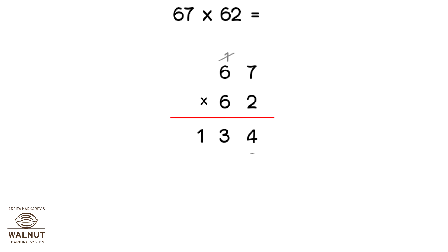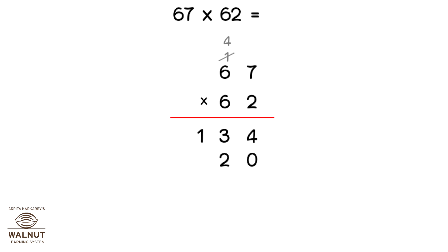Then we write the 0 in the units place in the next line and start multiplying by 6. 6 into 7 is 42. We write 4 above the next number and 2 below. Then we do 6 into 6 — that is 36. Here we add the 4, which becomes 40.